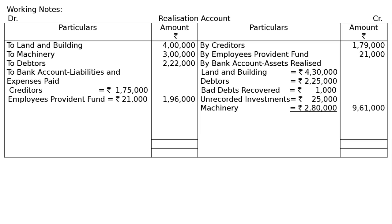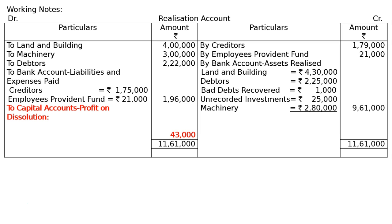In the debit side we have assets, and realization is there; in the credit side we have liabilities, and payments are on the debit side. The credit side totaling is Rs. 11 lakh 60,000. Taking it to the debit side and finding the gap gives Rs. 43,000 — this Rs. 43,000 is the profit on realization.